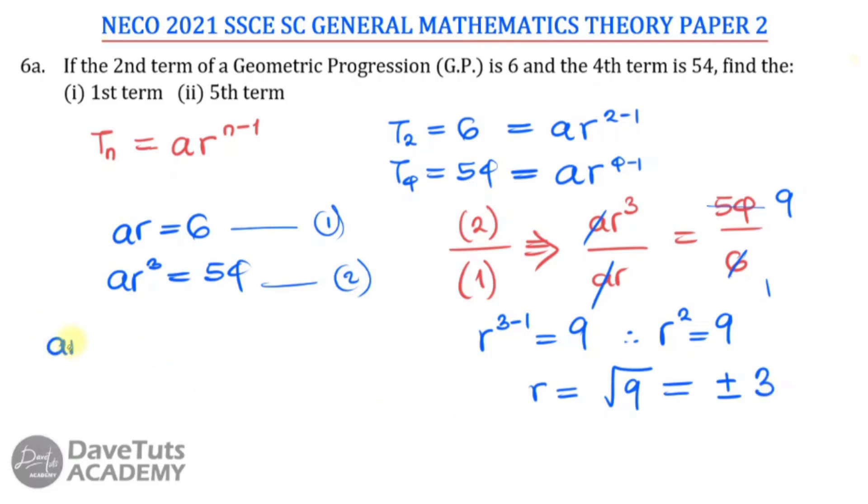So we're noting R to be then. We know that AR is 6. Therefore, A will be 6 over R. In the first case, when R is 3, A will be 6 over 3. And in the second case, when R is minus 3, A will be 6 over minus 3. So we have A to be 2 or A is minus 2, just like we have R is 3 or minus 3.